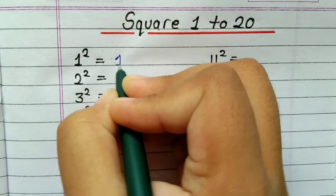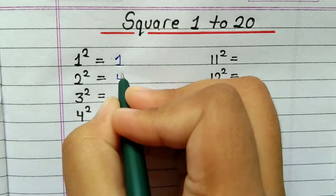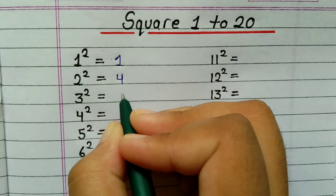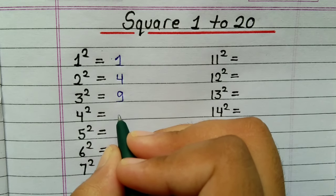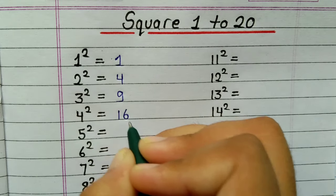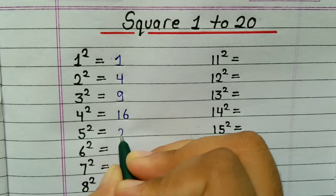Let's start. 1 squared is 1, 2 squared is 4, 3 squared is 9, 4 squared is 16, 5 squared is 25.